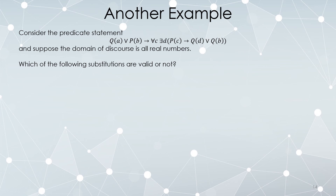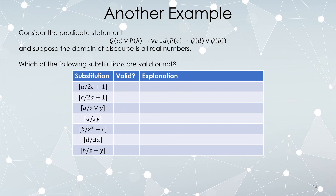Another example. Here's a possible predicate statement: the domain of discourse is still all real numbers. Q of A or P of B implies for every C there exists a choice of D so that P of C implies Q of D or Q of B. We'll just ask which substitutions are valid. Can I replace A with 2C plus 1? No — A is a free variable, that's good, but C already exists in this statement, so this substitution is not allowed.